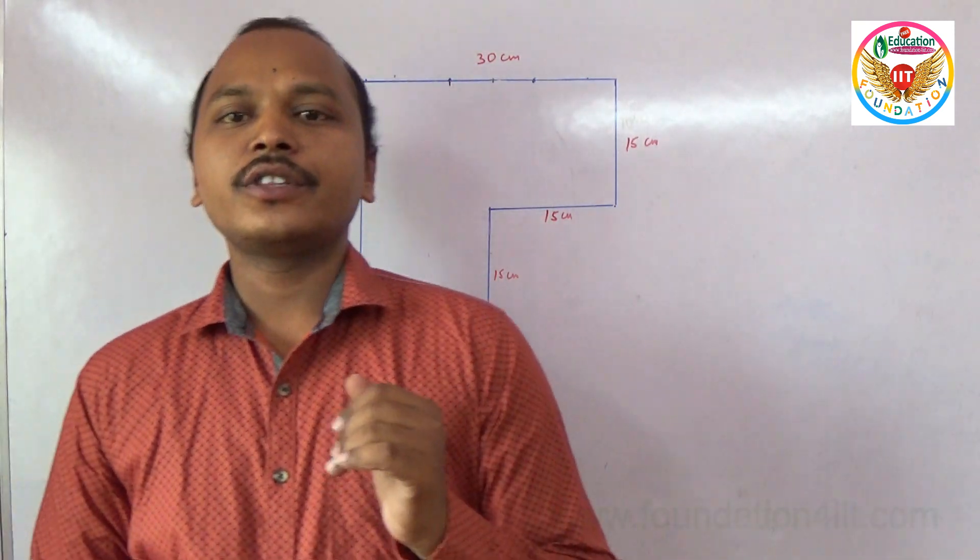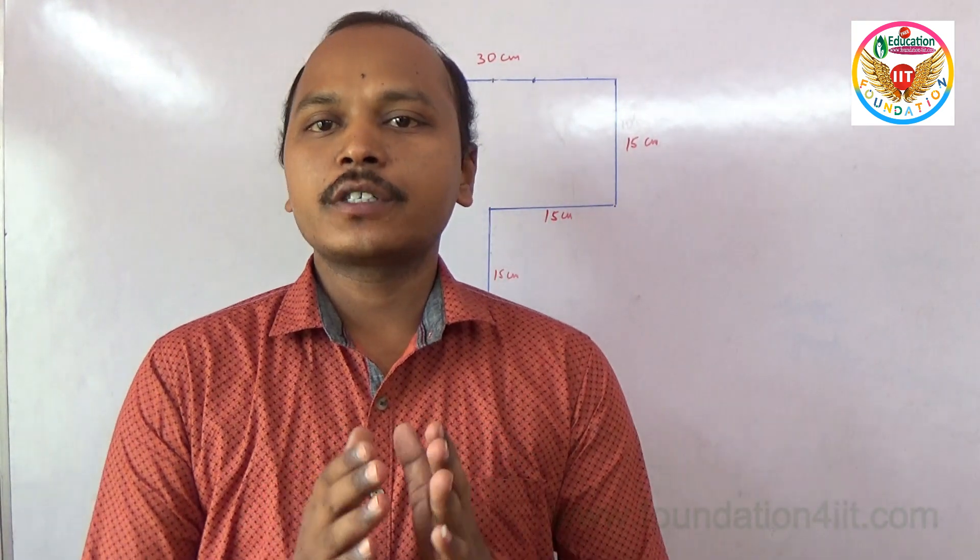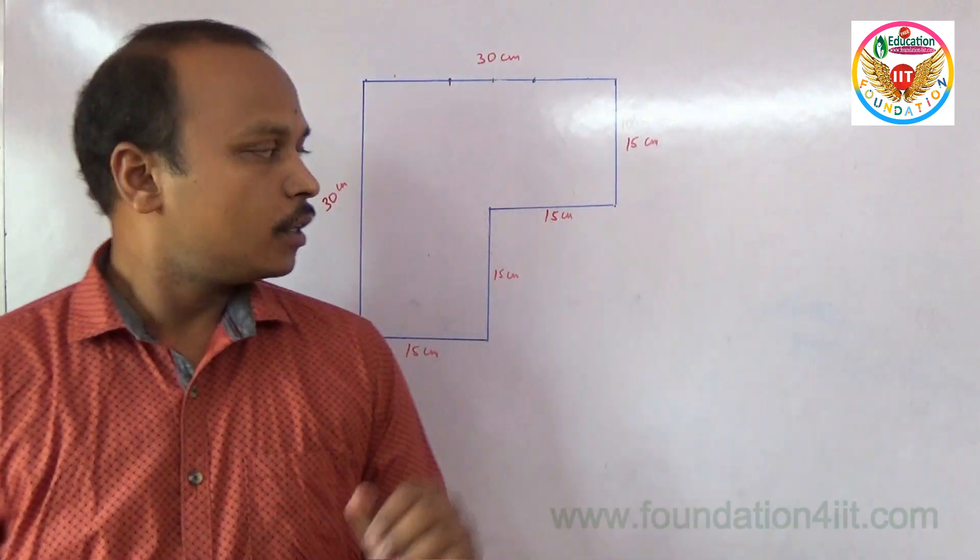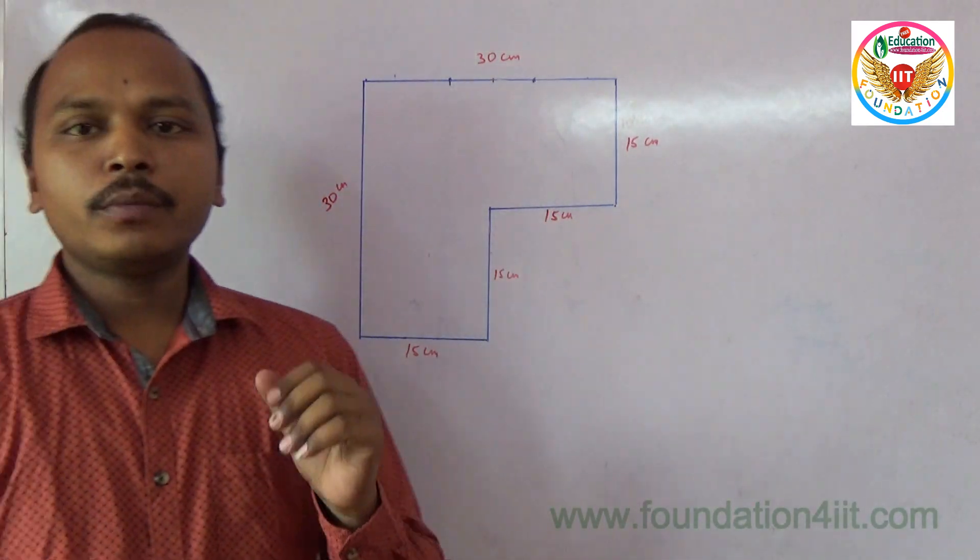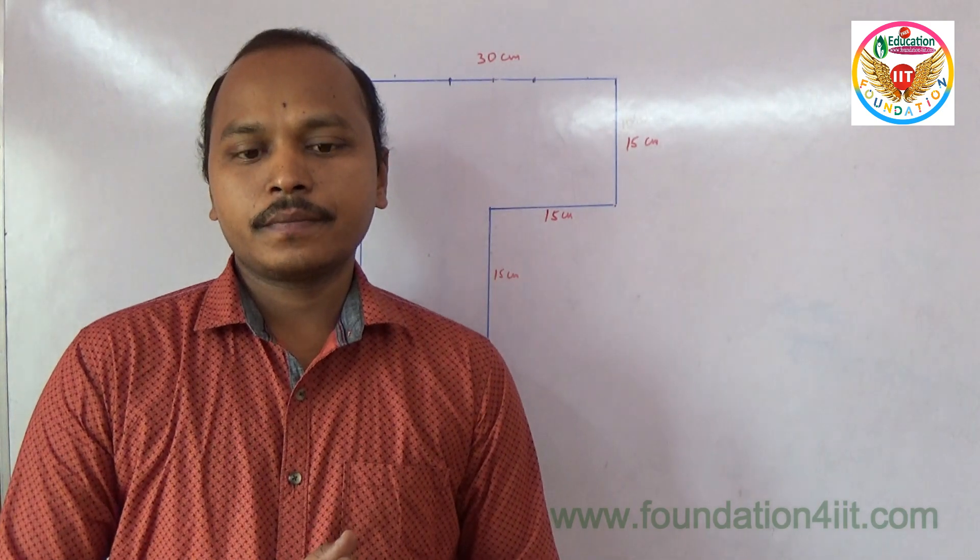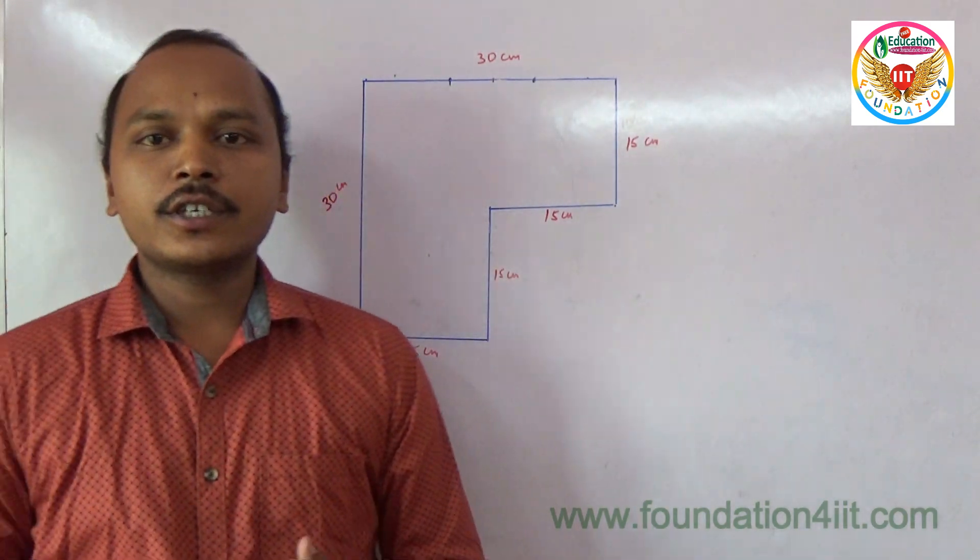Welcome to the educational channel. In this video, I'll explain the concept of identical shapes. Here's an example: this is a diagram we need to make into four identical shapes. Actually, making three identical shapes is simple.